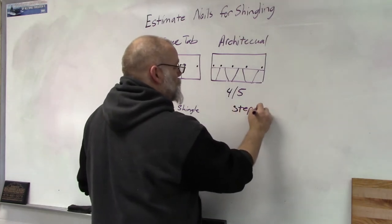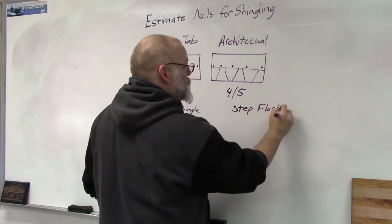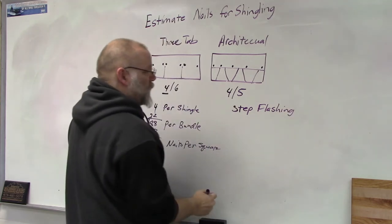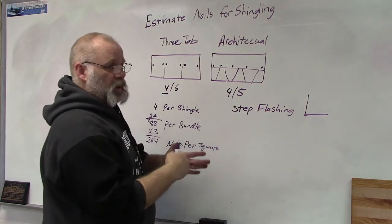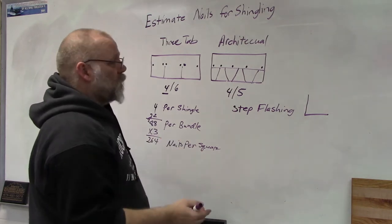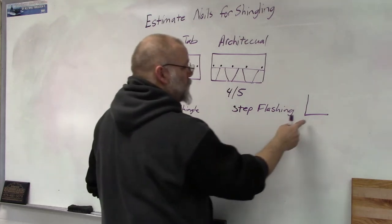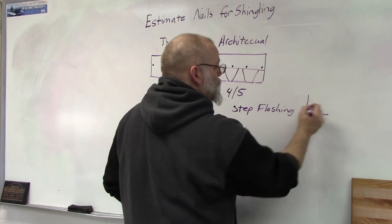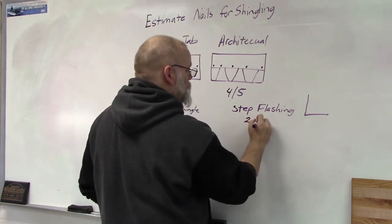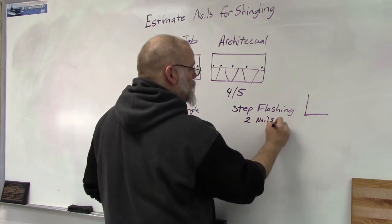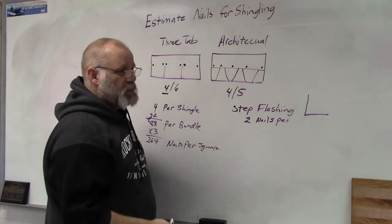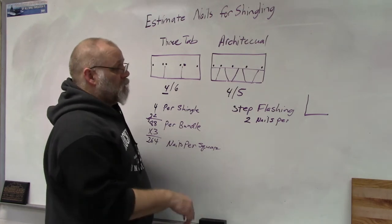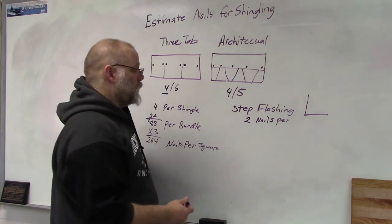Now when nailing shingles on, it's not only the shingles. Step flashing is the angled flashing that you put where one wall butts into another one, and you would need two nails per piece of step flashing. So if you're putting on 50 pieces of step flashing, you're going to need 100 nails.